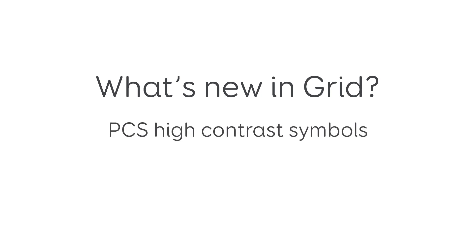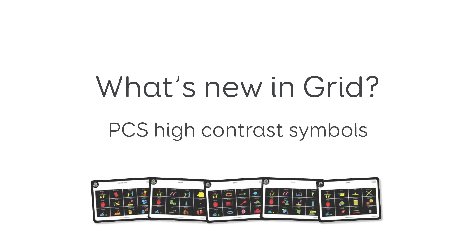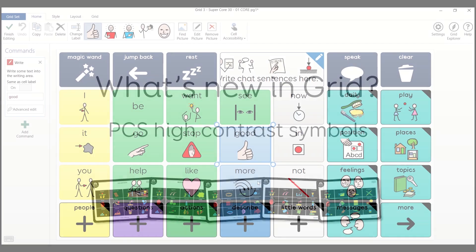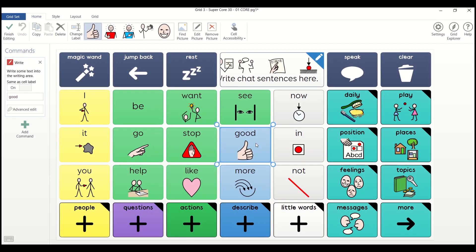You can now access PCS High Contrast Symbols in Grid. To add this symbol library, make sure you have the latest version of Grid. Then open a grid set and enter edit mode. Select a cell.